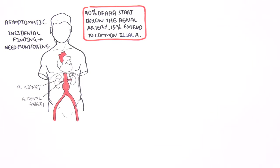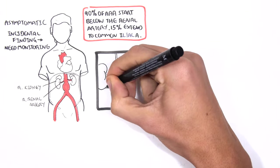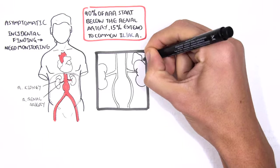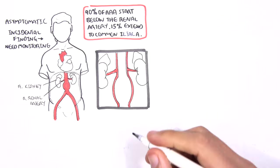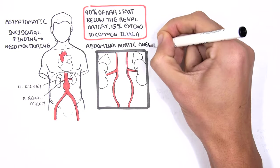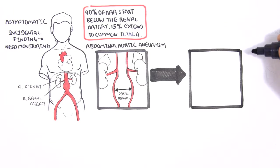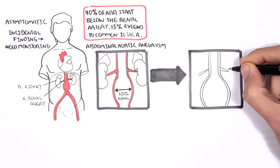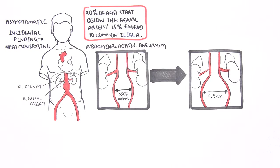Let us have a closer look. Here is your abdominal aorta with an aneurysm below the renal arteries. In general, an aneurysm can be defined as an increase of 50% of the vessel's diameter. A AAA requires continuous monitoring. Large abdominal aortic aneurysm is defined as greater than 5.5 cm, and this requires treatment.